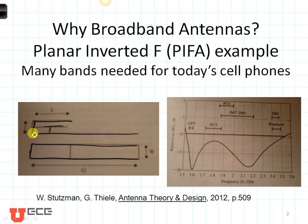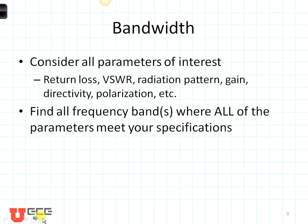When we're considering the bandwidth of an antenna, we first look at all possible parameters of interest. For example, the return loss, the VSWR, the radiation pattern, gain, directivity, polarization, etc. We find all the frequency bands where all of the parameters meet our specifications, and then that defines the bandwidth of the antenna.